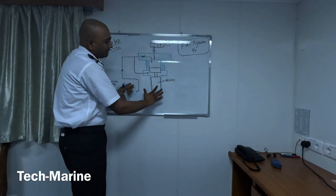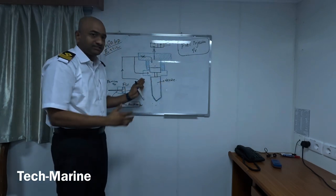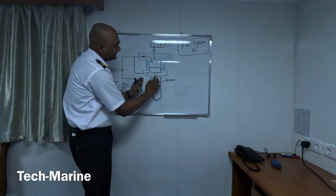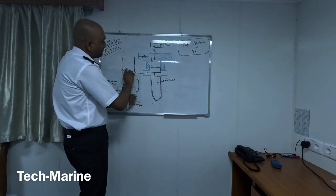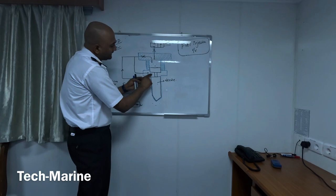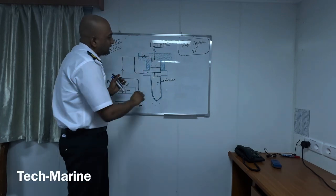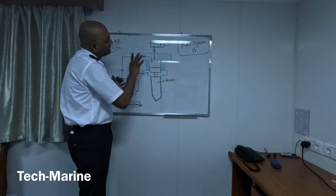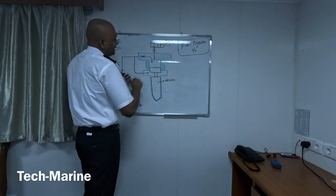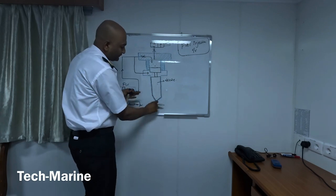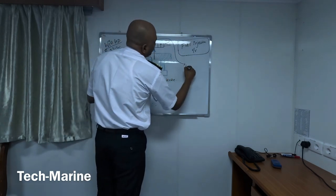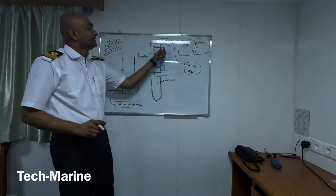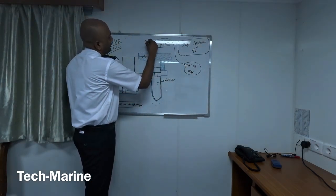Engineers, you have to understand this design of this WinGD injector because I consider this design is superb and out-of-box thinking compared to MAN B&W engines. When the fuel comes to the needle, it comes to the bottom and top part, and because of this pressure design it stays closed. The top part has one orifice. When you drain the top part of the fuel with the solenoid valve, the needle lifts and the fuel is injected.